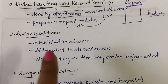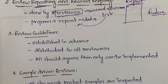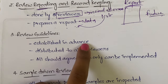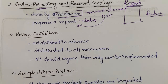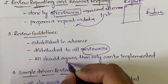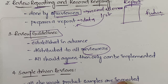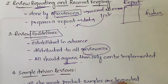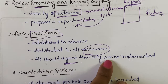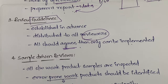Review guidelines have to be established in advance. You need to state the guidelines initially — for example, how long each person should speak, how far in advance to inform participants. These guidelines must be distributed to all reviewers — all people participating in the review. Each person has to accept these guidelines, and only then can they be implemented.